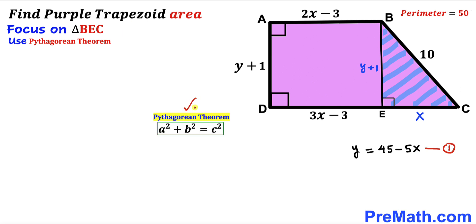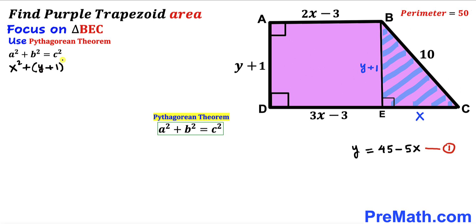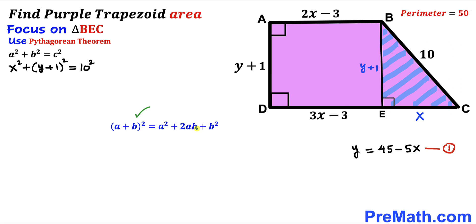Now we apply the Pythagorean theorem: a squared plus b squared equals c squared. Our hypotenuse is 10, and the other two legs are y plus 1 and x. Filling in the formula: x squared plus (y plus 1) squared equals 10 squared. Expanding using the identity (a plus b) squared equals a squared plus 2ab plus b squared gives us x squared plus y squared plus 2y plus 1 equals 100.